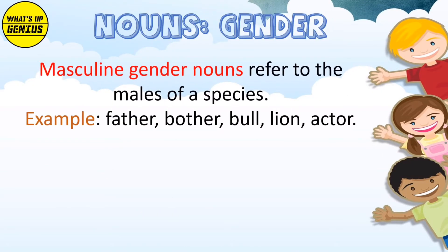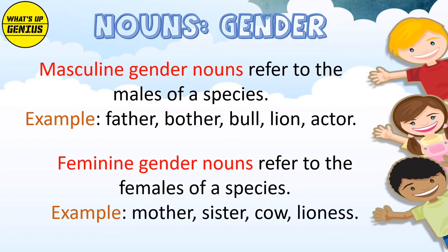Masculine Gender Nouns refer to a male of species. Example: Father, Brother, Bull, Lion, Actor. Feminine Gender Nouns refer to females of a species. Example: Mother, Sister, Cow, Lioness.